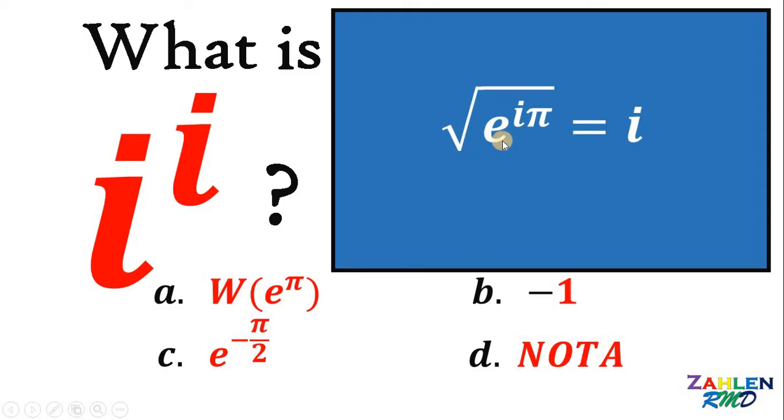Now, on the left-hand side, square root of e raised to iπ can be written as e raised to iπ raised to 1 over 2.